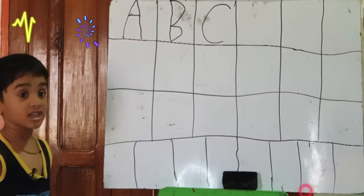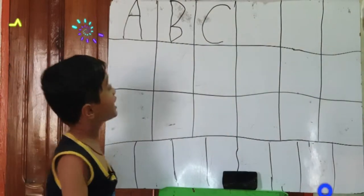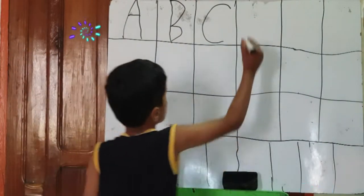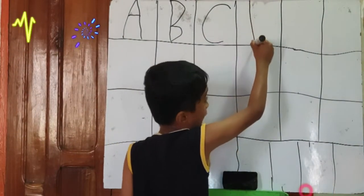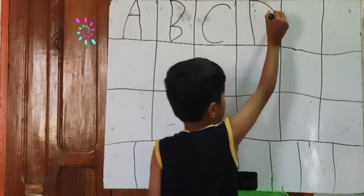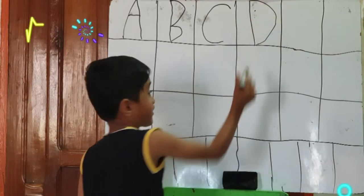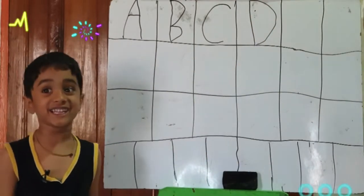Now we are going to write D. One standing line, one curve. That makes D.